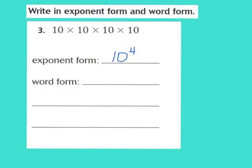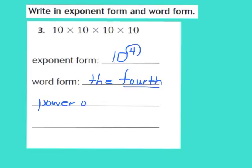I also have to write this expression in word form. Just like we did with question number 2, I'm going to start out by saying "the." This time my exponent is a 4, so I'm going to say "the 4th power of 10." I now have my expression written in both word form and exponent form, and what they both say is we're multiplying that factor 10 four times.